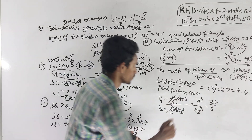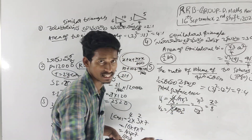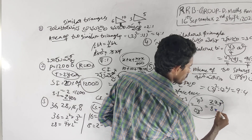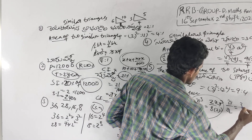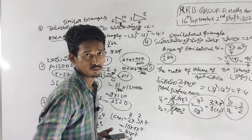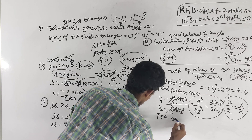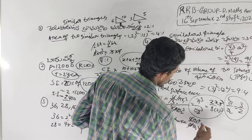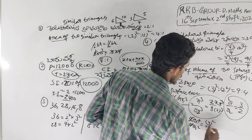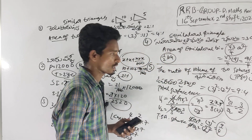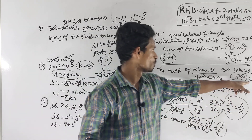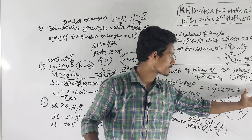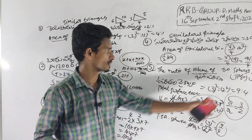V1/V2 using 4/3 π r cube: 4/3 π cancels, so r1³/r2³ = 27/8. Therefore r1/r2 = 3/2. The total surface area ratio is r1² to r2², which is 3² to 2², giving 9 is to 4.